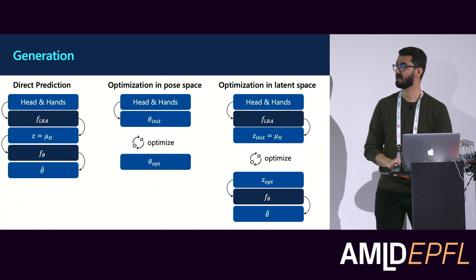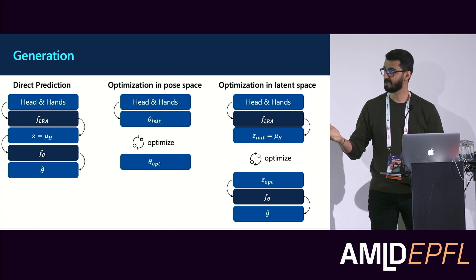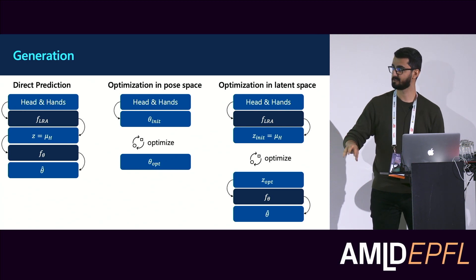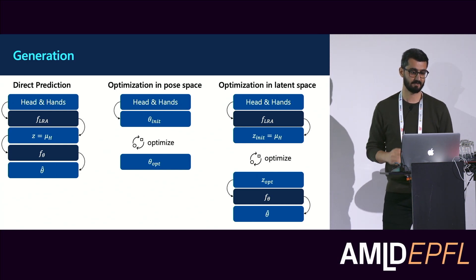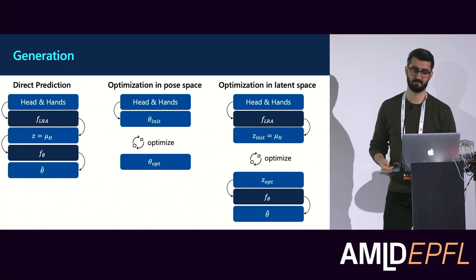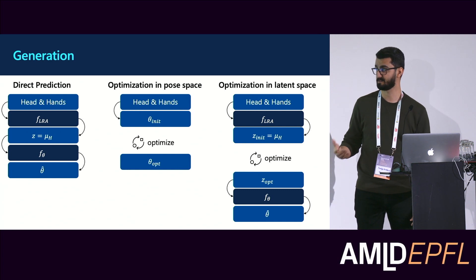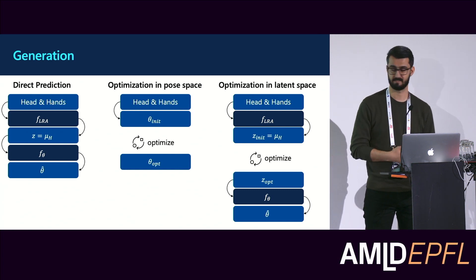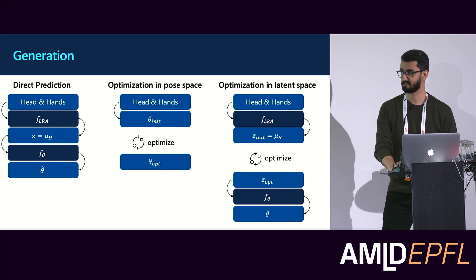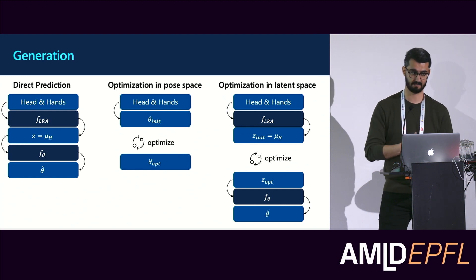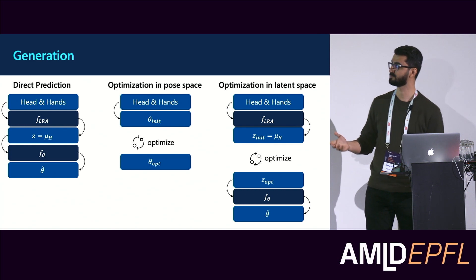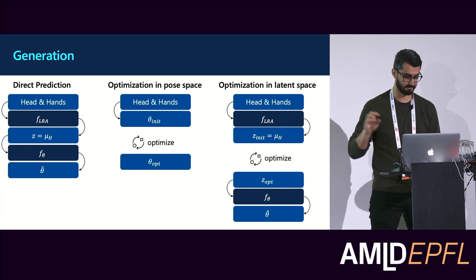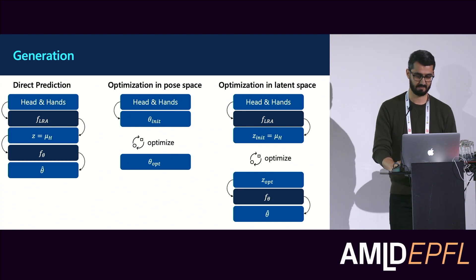To generate new poses, we have a couple of options. We can use direct prediction: given head and hands, we pass them to the transformer model, get the sub-region in the latent space, take the mean, and pass it to the normalizing flow to get a pose. We can also optimize in pose space, searching for parameters theta with high likelihood under our flow-based model that also match the head and hand observations. For optimization in latent space, we have a good initialization from the mean of the approximated region, and we will see how that affects optimization.